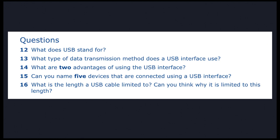USB stands for Universal Serial Bus and uses serial data transmission. Advantages include speed, automatic computer recognition, and the ability to power devices like phones, USB drives, webcams, and Wi-Fi transmitters. The length of a USB cable is limited to five meters because any longer and the USB signal loses its strength.